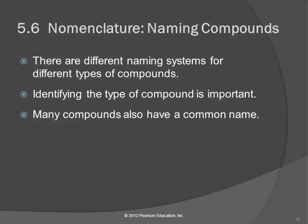Section 5.6: nomenclature, naming compounds. We did this in lab, so this is a rehashing of that. It's good because it's helpful to hear this stuff more than once. There are different systems for naming different types of compounds, and so we have to figure out what type of compound we're dealing with.